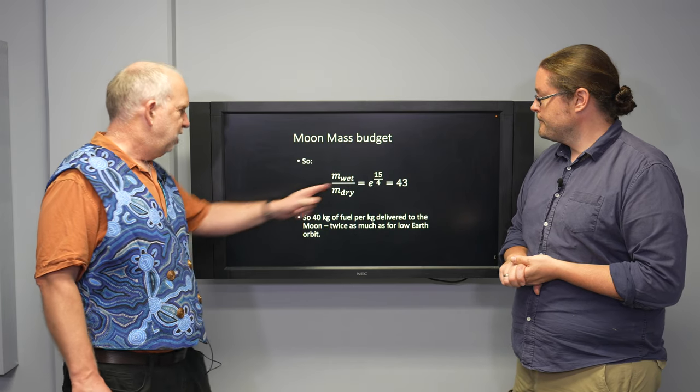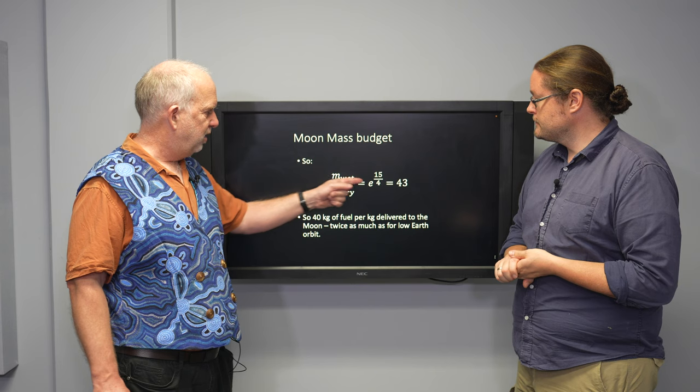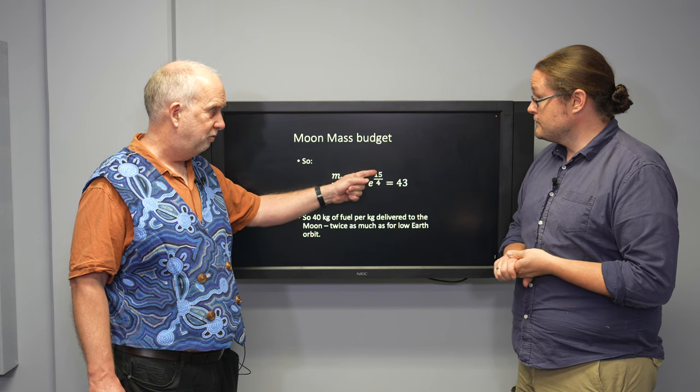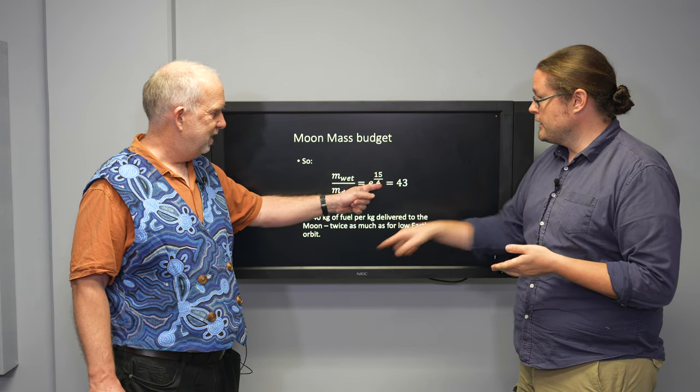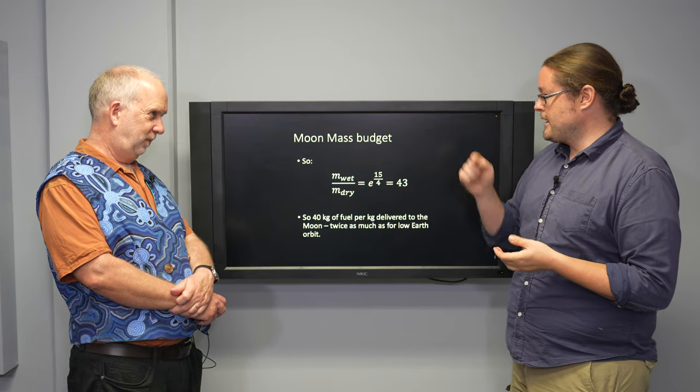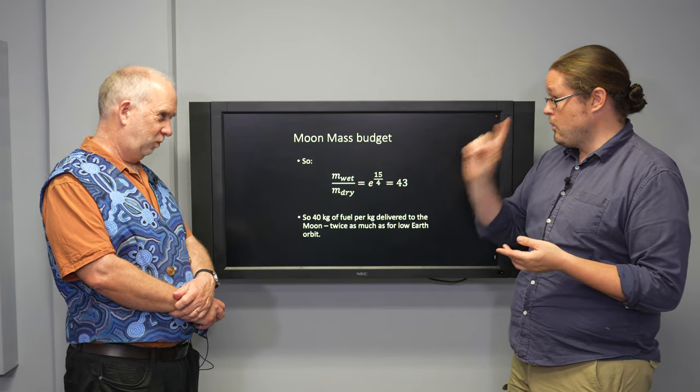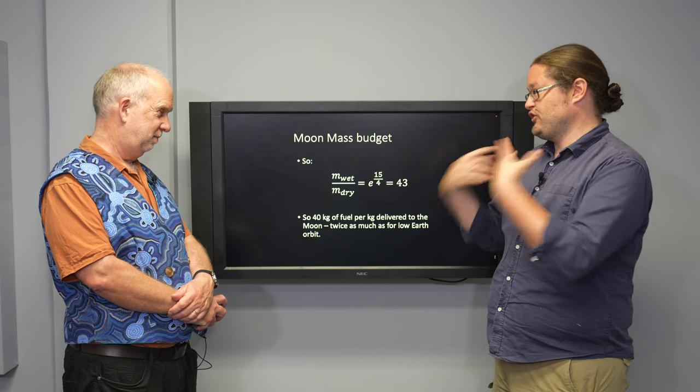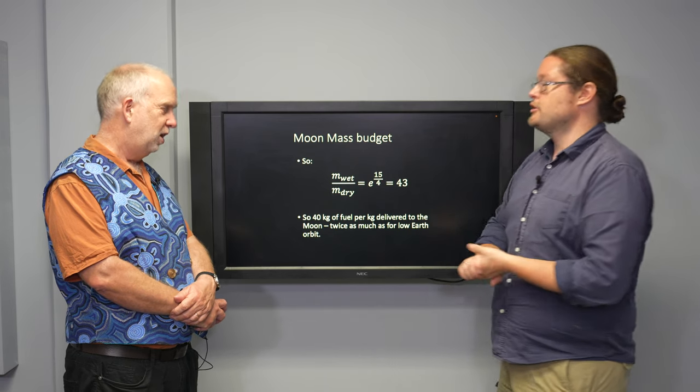So we need 15 to get to the Moon. So the M wet over M dry is E to the 15, which is delta V, over four, which is the VE. Which is about 43. So you need about 40 kilograms of fuel to take one kilogram of stuff to the Moon's surface. So that's worse.